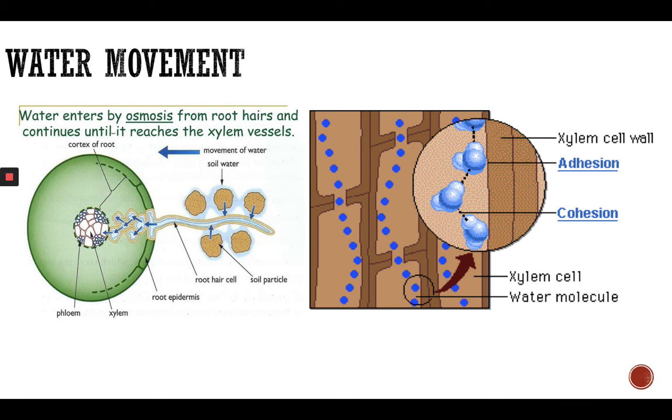Water movement: water enters by osmosis from root hairs and continues until it reaches the xylem vessels. You might think, how does water actually enter the root hairs and go up to the higher and tall trees? Just because of the water properties: adhesion and cohesion properties. Waters have adhesive and cohesive properties. Cohesion means that water molecules stick to each other, and adhesion is when water molecules stick to certain substances.